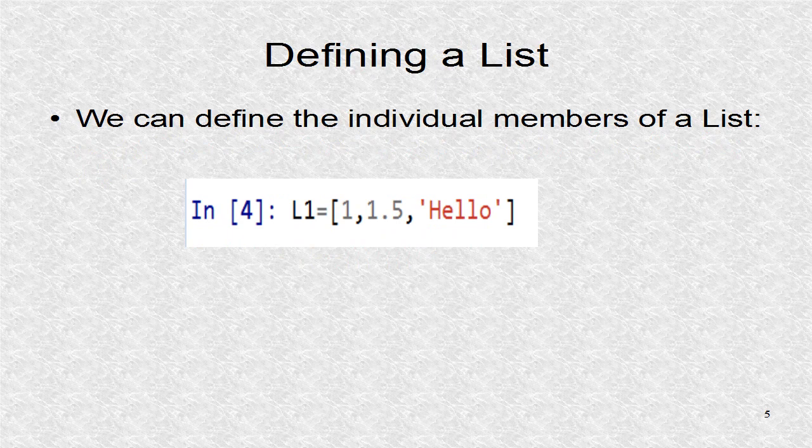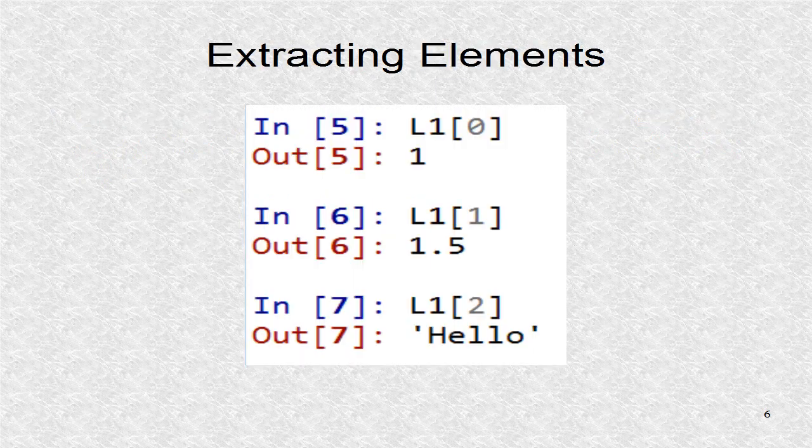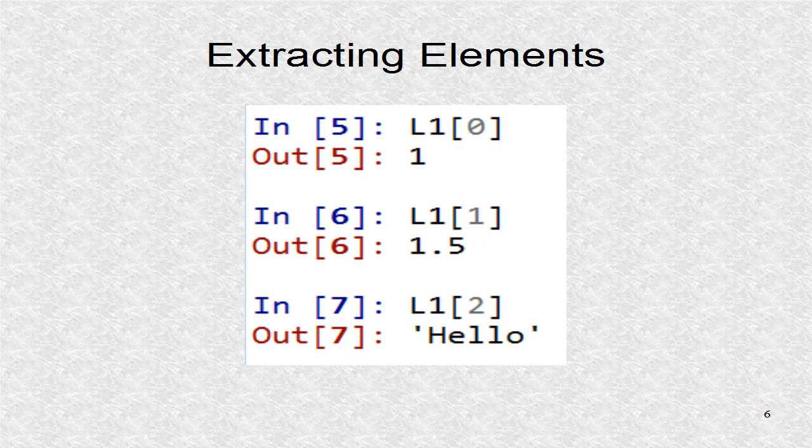Here we define a list of three different elements. We can extract individual elements of the list using the index number inside square brackets. In Python, this holds even for other data structures.